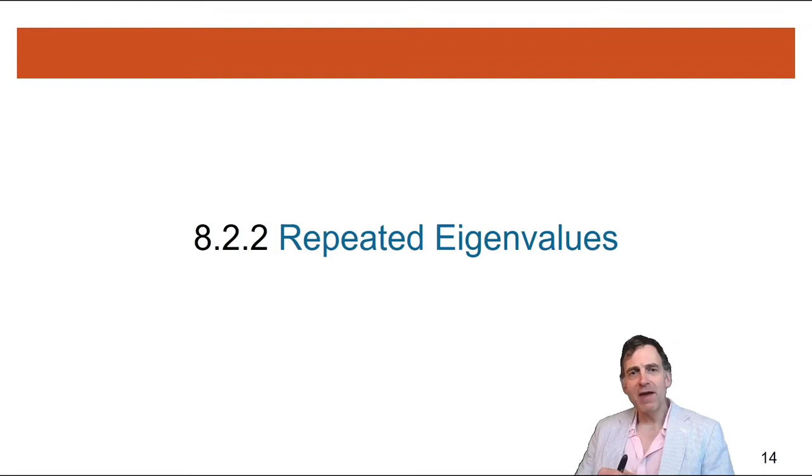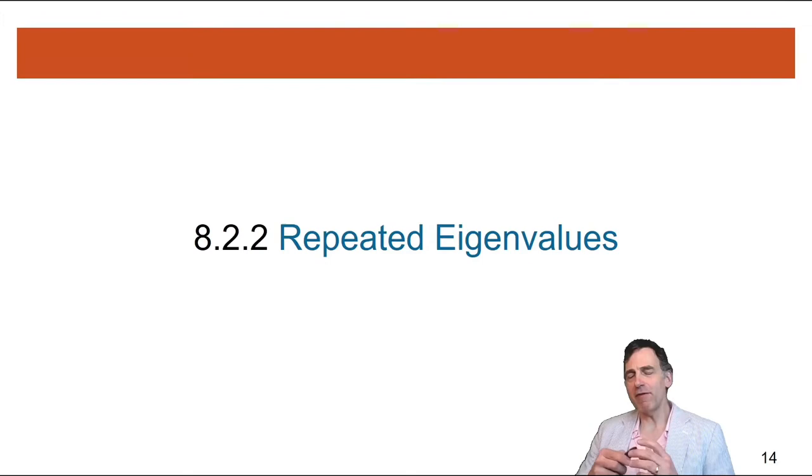So last Friday, we learned that if you have real eigenvalues, then you can easily come up with solution vectors using those. Today we're going to see what happens when you have repeated eigenvalues.